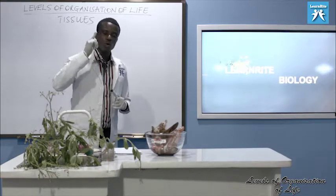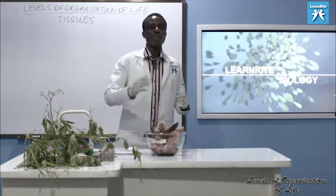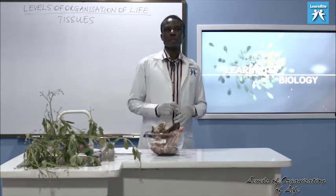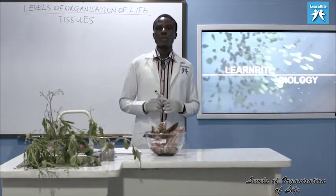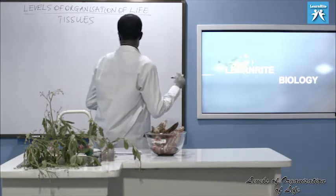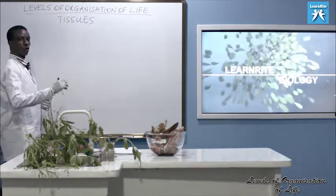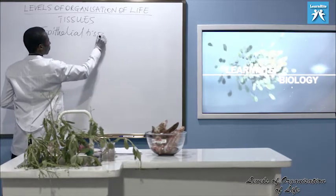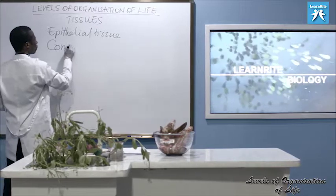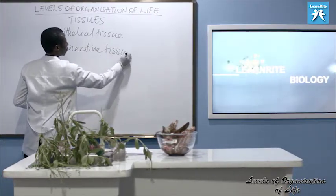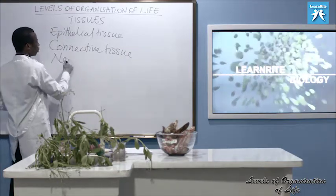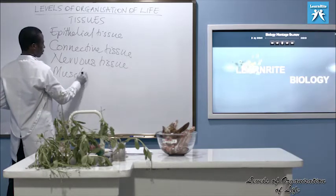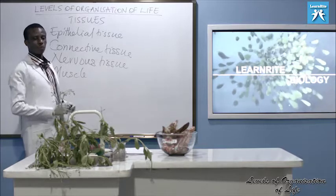Let's look at groups of tissues in animals. Even though I am going to give you examples of tissues, I want to inform you that tissues in animals are grouped into four categories. We have connective tissue, we have epithelial tissue, then we have nervous tissue, then we have muscle tissue, or muscular tissue.